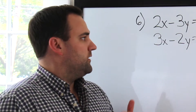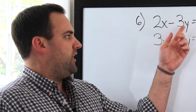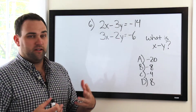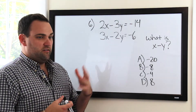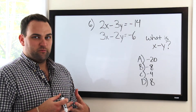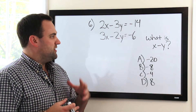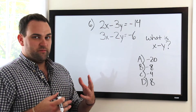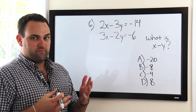We can always solve these things by isolating a variable and plugging it back in, but it takes a long time. Remember, on your SAT there's probably going to be some sort of shortcut, especially if it's one of those questions that's early on in the section. So always look to see if there's some way that you can do things a little bit simpler and quicker, because it's probably there.